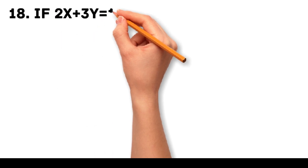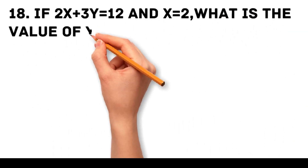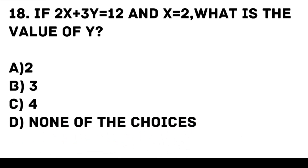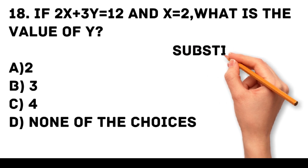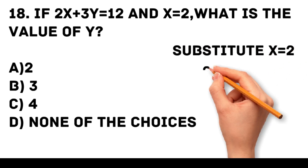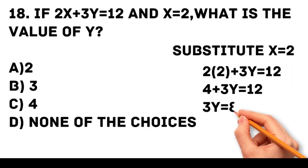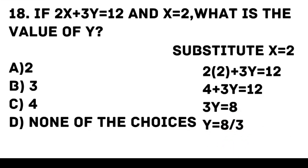Question 18. If 2x plus 3y equals 12 and x equals 2, what is the value of y? A. 2. B. 3. C. 4. D. None of the choices. Answer: D. None of the choices. Substitute x equals 2 into the equation. 2 times 2 plus 3y equals 12. 4 plus 3y equals 12. 3y equals 8. y equals 8 over 3.